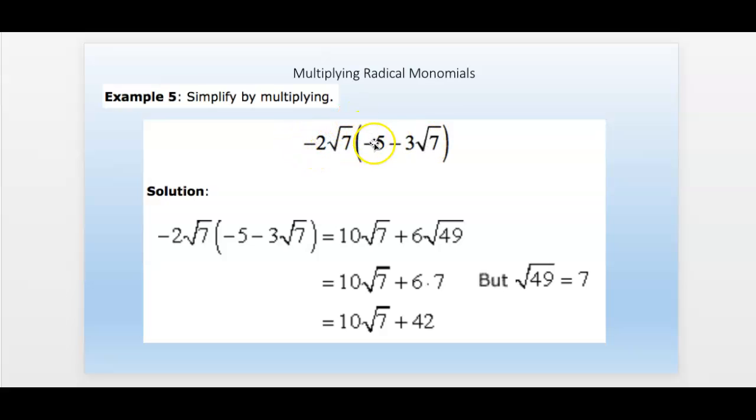So I take the negative 2 times negative 5, and I get the 10 right here. The square root of 7 just comes along right there. Then I take the negative 2 times negative 3, and I get 6. And 7 times 7 is 49, and that goes underneath the radical sign. We know the square root of 49 is 7. So this last term just becomes 6 times 7. That's 42.